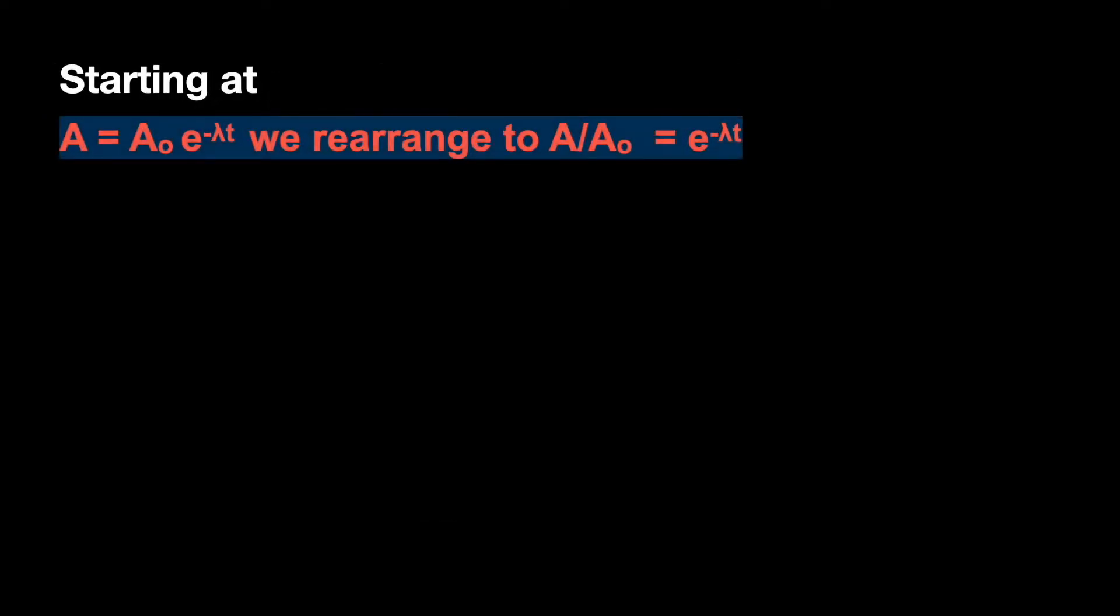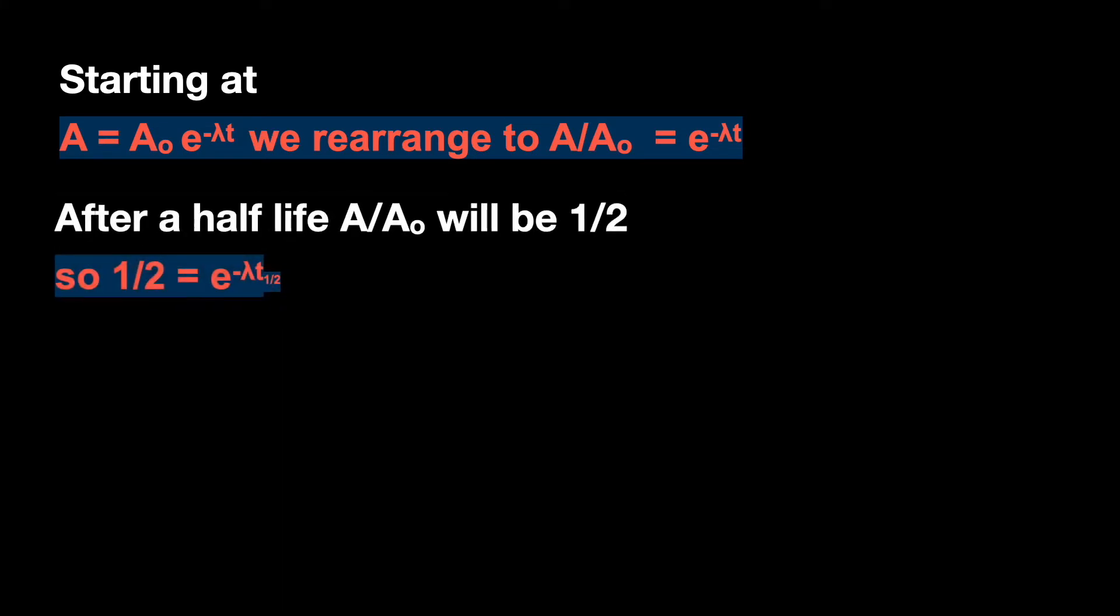Starting with this equation, we'll rearrange it, dividing both sides by A0. After one half-life, A will be half of A0. So we now have one-half equals e to the minus lambda times the half-life.